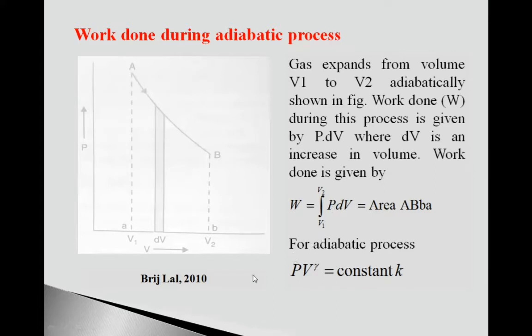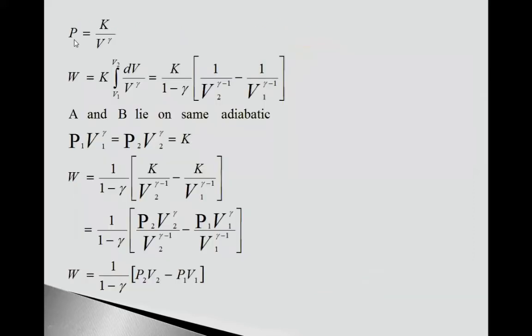Now friends, you know for adiabatic process, PV^γ = constant K. From this we can calculate pressure P equals K upon V^γ.